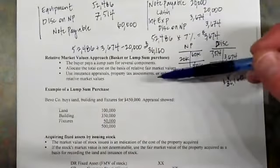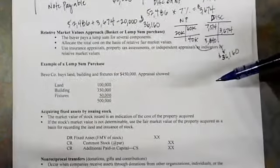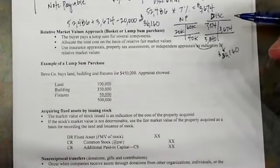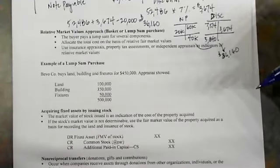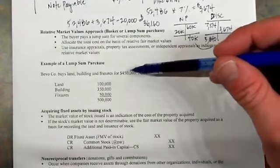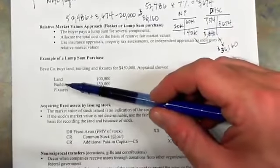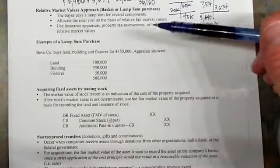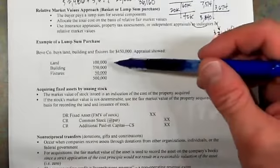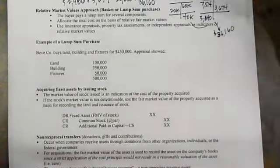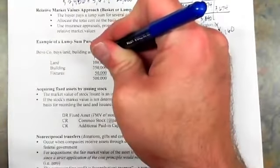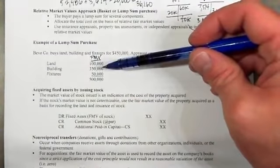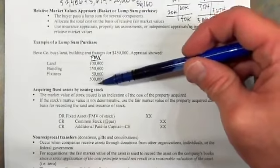Another approach is when you buy multiple assets at the same time and make a lump sum purchase. The lump sum purchase is handled a lot like the revenue packages we examined prior. We have a $450,000 price tag for land, building, and fixtures purchased altogether. We had an independent appraisal showing fair market values: $100,000 for land, $350,000 for the building, $50,000 for fixtures — a total of $500,000.